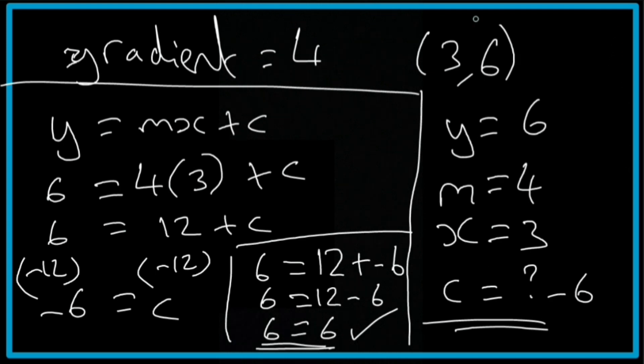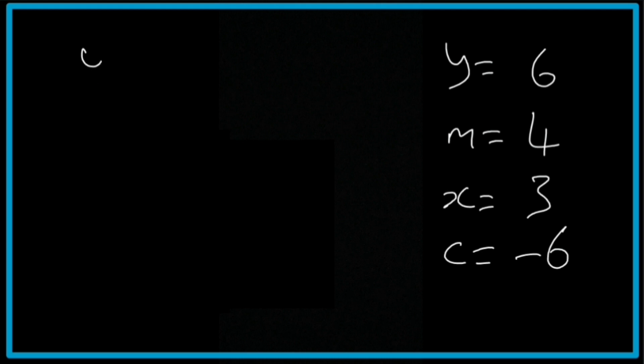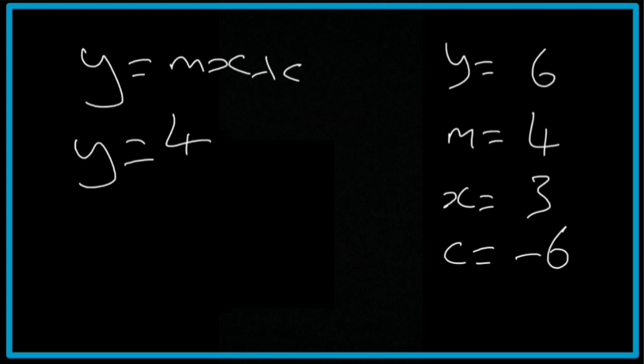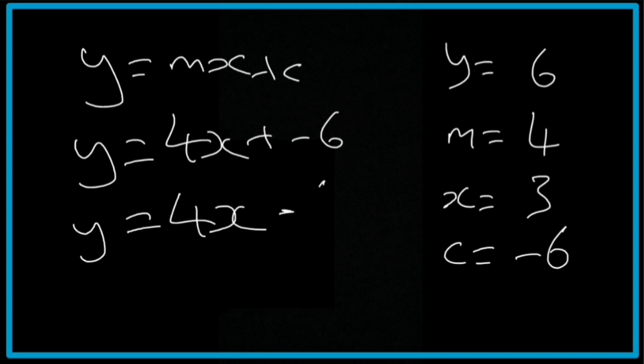Now that we've found our values — y = 6, m = 4, x = 3, c = -6 — we can write the equation. So y = mx + c gives us y = 4x + (-6). A positive and negative next to each other becomes a negative, so the final equation is y = 4x - 6.